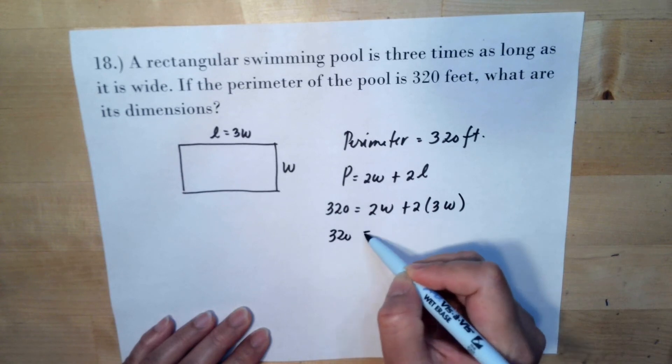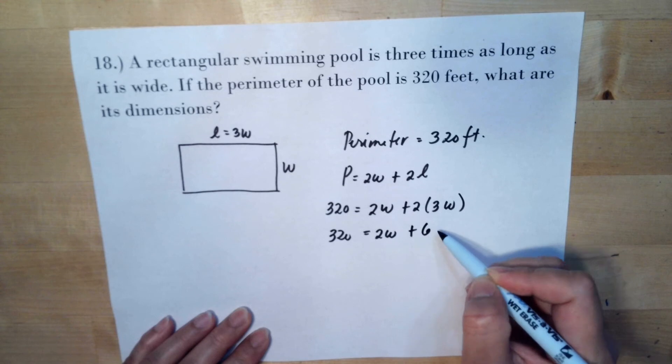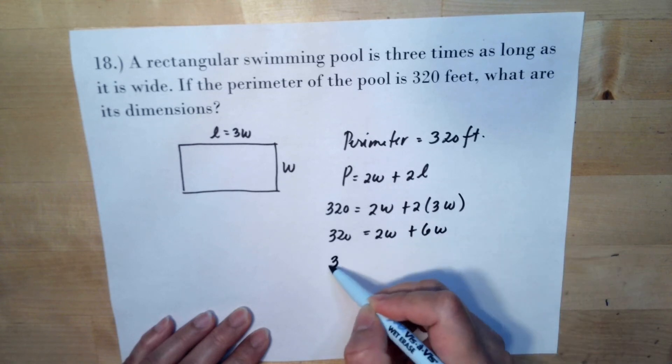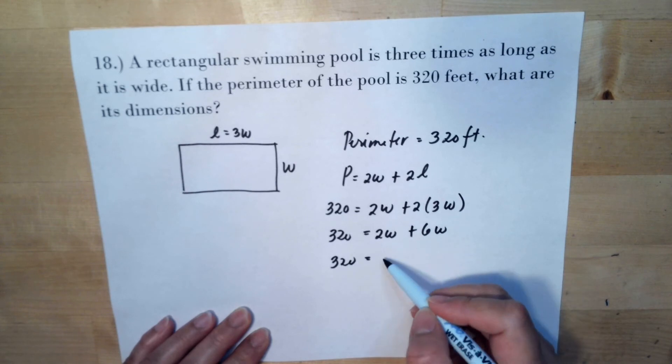We have 320 is equal to 2W. 2 multiplied by 3 is 6. So we have 320. 2W plus 6W is 8W.